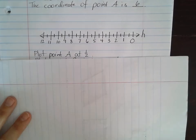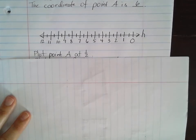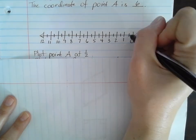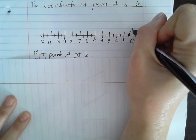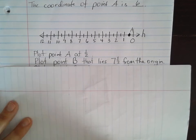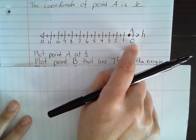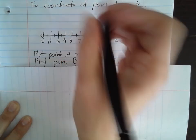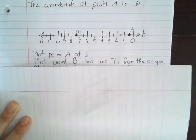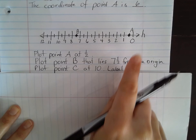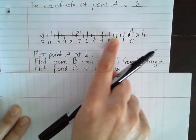I could put a point on here — plot point A at one-half. So if I want you to plot a point, you would literally be putting the point on there yourself at one-half. Here's zero, here's one, halfway would be point A. You could also hear: plot point B that lies seven and a half from the origin. The origin is zero, so we go seven and a half from zero — here's seven and eight, so here would be seven and a half. We would plot point B there. Plot point C at 10 — we would go from the origin, start at zero, and go all the way to 10.